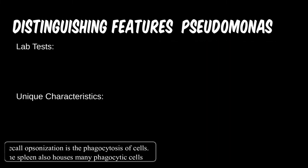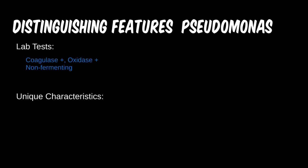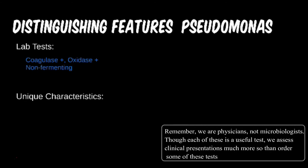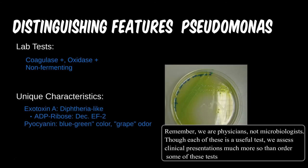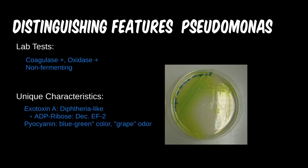Pseudomonas is coagulase positive, like Staphylococcus aureus, and oxidase positive, like most microbes in this module. As its clinical presentation is quite different from most in this module, we shouldn't easily mix them up on testing questions. Being a non-fermentor, it is also relatively low yield. Exotoxin A, seen in Pseudomonas, also uses ADP ribosylation pathways, like cholera and pertussis. Its effect is different in that it inhibits elongation factor 2 in cells, which inhibits cell synthesis.